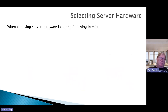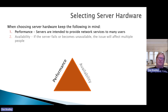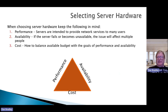When selecting server hardware, keep a few things in mind. Performance is important — servers are intended to provide network performance to many users. You want to keep in mind the size of the database, the type of data, and how readily it needs to be accessed. Additionally, make sure that availability needs are met. If a server fails or becomes unavailable due to a lack of redundancy, it can affect multiple people — stakeholders involved in a large project can suddenly be left without any help. And of course, one of the biggest things is cost: how can you balance your available budget with the physical needs, performance, and availability goals?